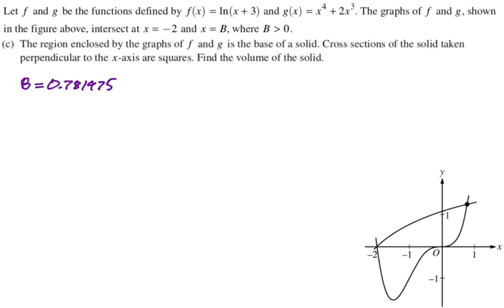So to find the volume with area of known cross sections, we just integrate, sorry, volume with known cross sections. What we want to do is just integrate the area of a cross section. So we have to work out the area of a cross section.